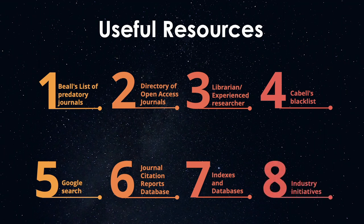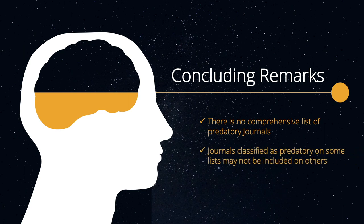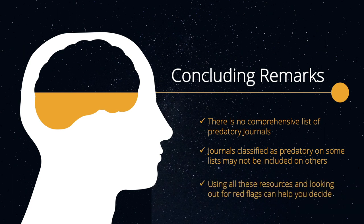And lastly, industry initiatives such as the Committee on Publication Ethics (COPE), Open Access Scholarly Publishers Association (OASPA), Journals Online Project (JOL), and African Journals Online Project (AJOL). Once again, predatory journals are rarely included in these initiatives. Unfortunately, there isn't one comprehensive list which you can refer to in order to determine if a journal is predatory. Journals classified as predatory on some lists may not be included on others. Therefore, using all these resources and looking out for red flags can help you come to a conclusion about the legitimacy of a journal.